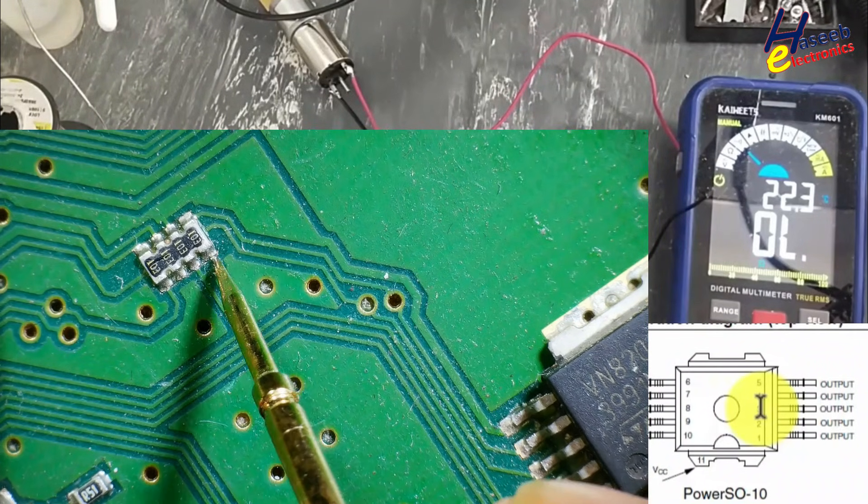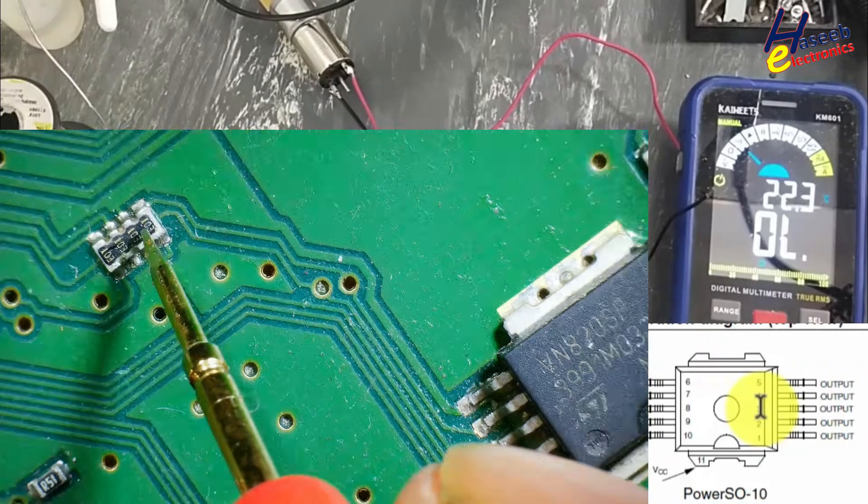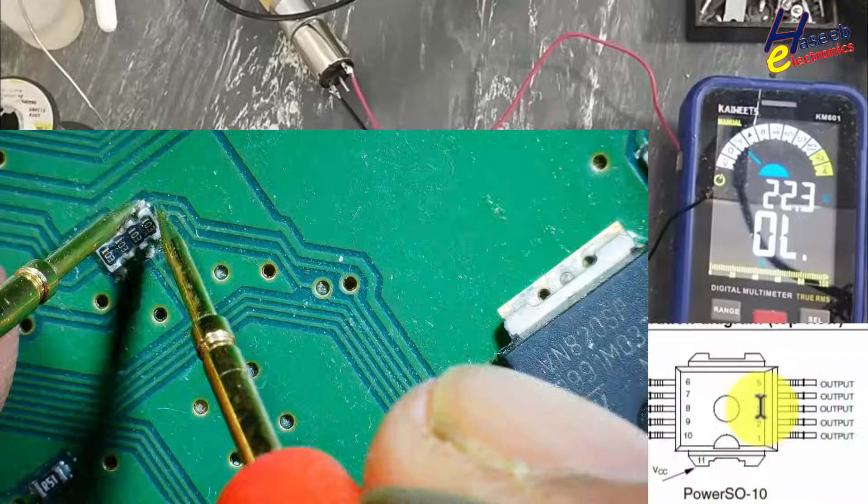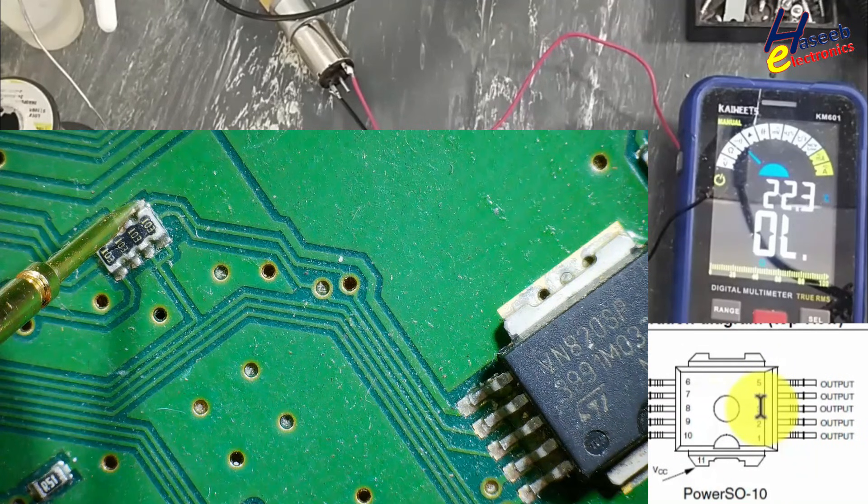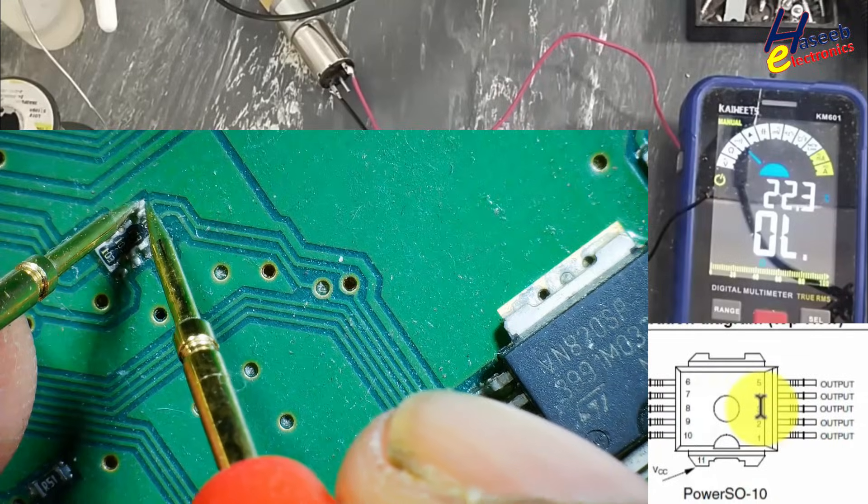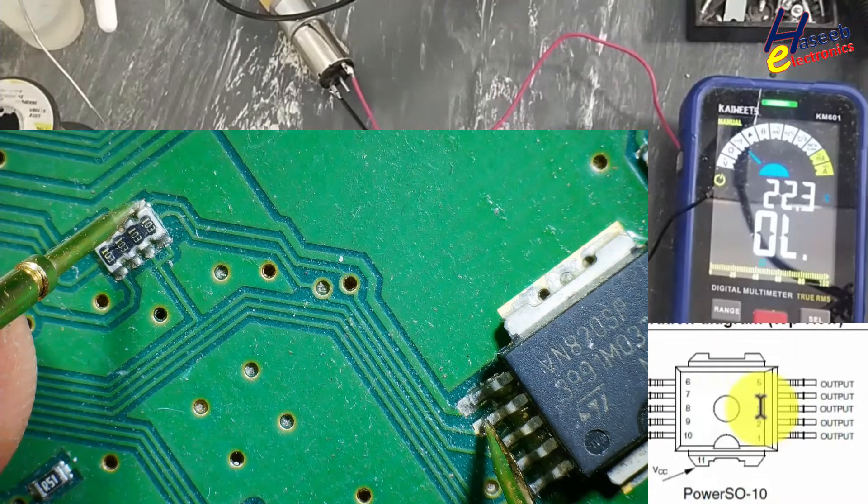This signal is limited by a 10k resistor. That means if we inject any 5 volt signal here, that will not provide a back load to the microcontroller. So we can inject any 5 volt signal here at this point.